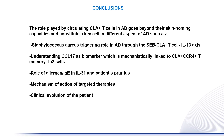In conclusion, the role played by circulating CLA-positive T-cells in atopic dermatitis goes beyond their skin homing capacities and constitutes a key cell type in the different aspects of atopic dermatitis, such as the Staphylococcus aureus triggering role through the CLA T-cell IL-13 axis, and understanding CCL-17 as a biomarker which is mechanistically linked to CLA-positive T-cells and memory TH2 cells.